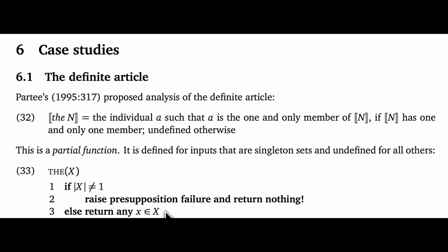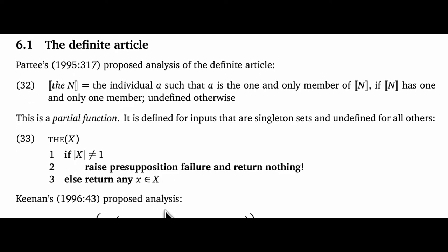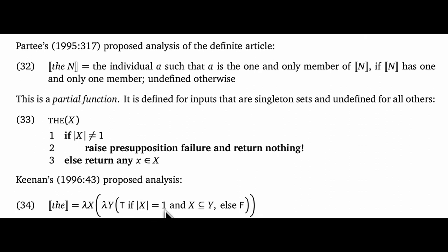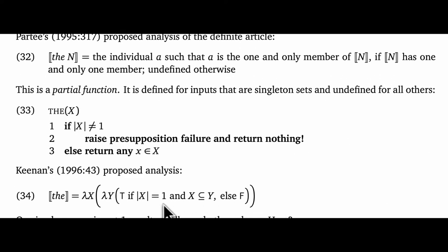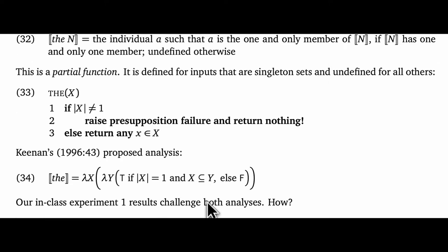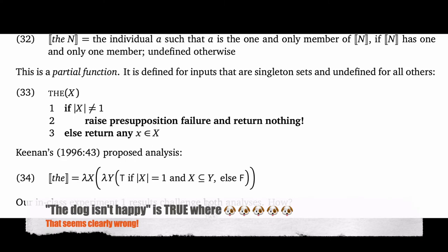So I think this is a reasonable start, and we can compare it with Keenan's proposal. What Keenan proposes is essentially that the singleton requirement is just part of the truth conditions. He gives it as a quantificational determiner, but the heart of it is this conjunction: X has cardinality 1, and X is a subset of Y. Now, this is going to give results that just seem wrong when we negate it. Consider 'the dog isn't happy.' If there are lots of dogs, then 'the dog is happy' is false, and so 'the dog isn't happy' will be true.